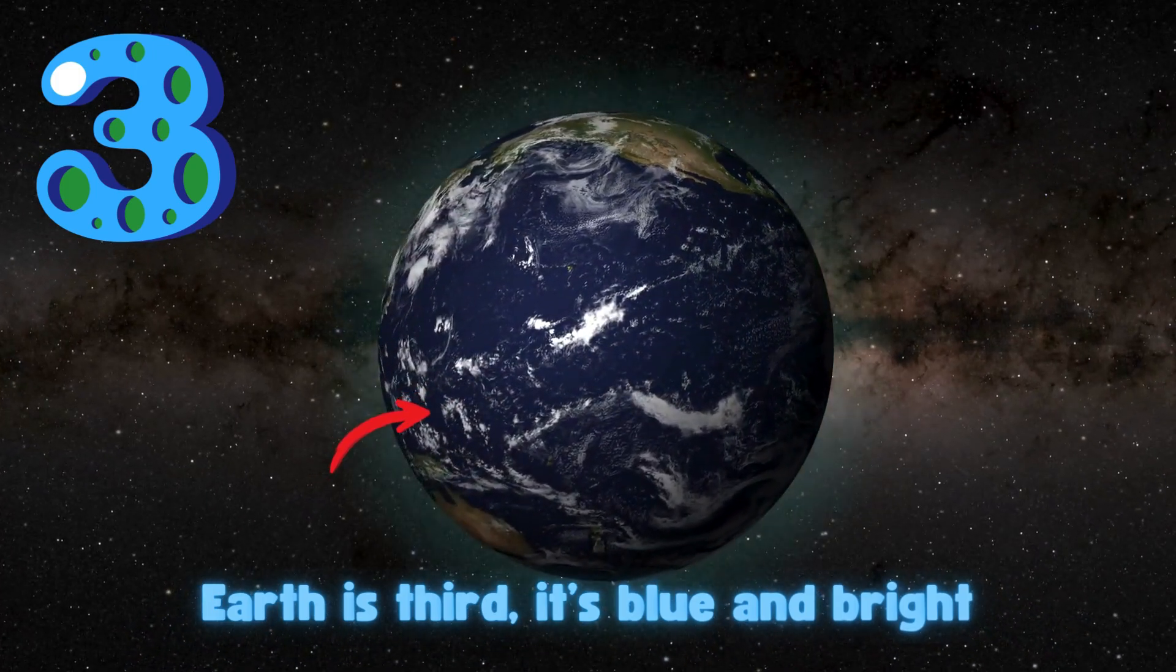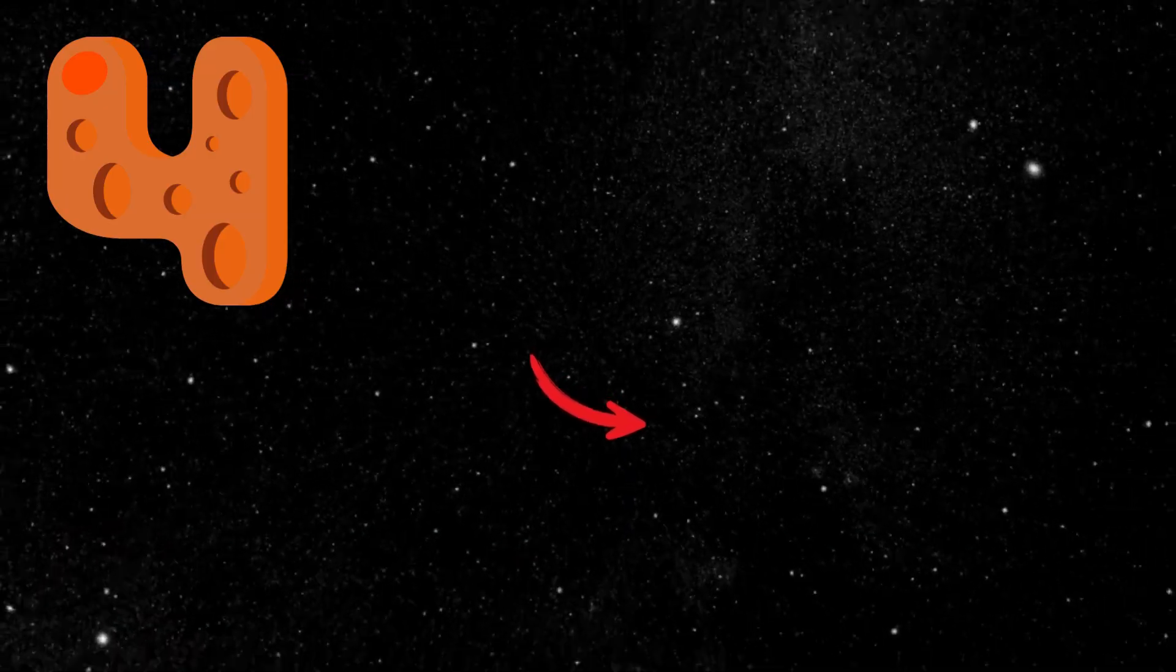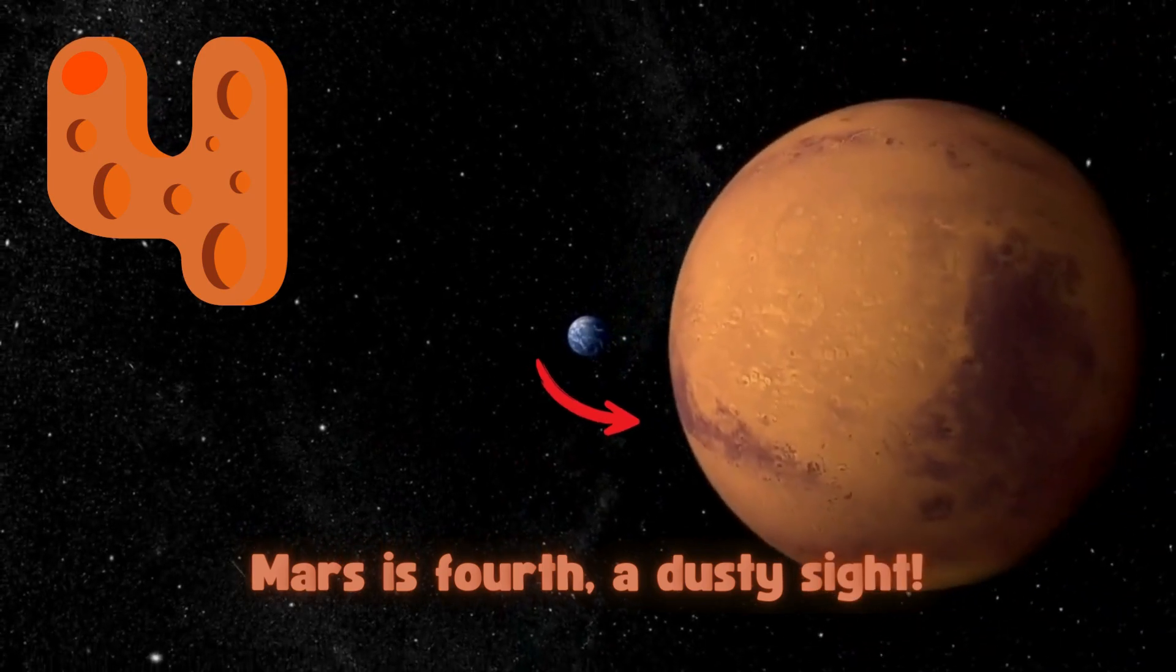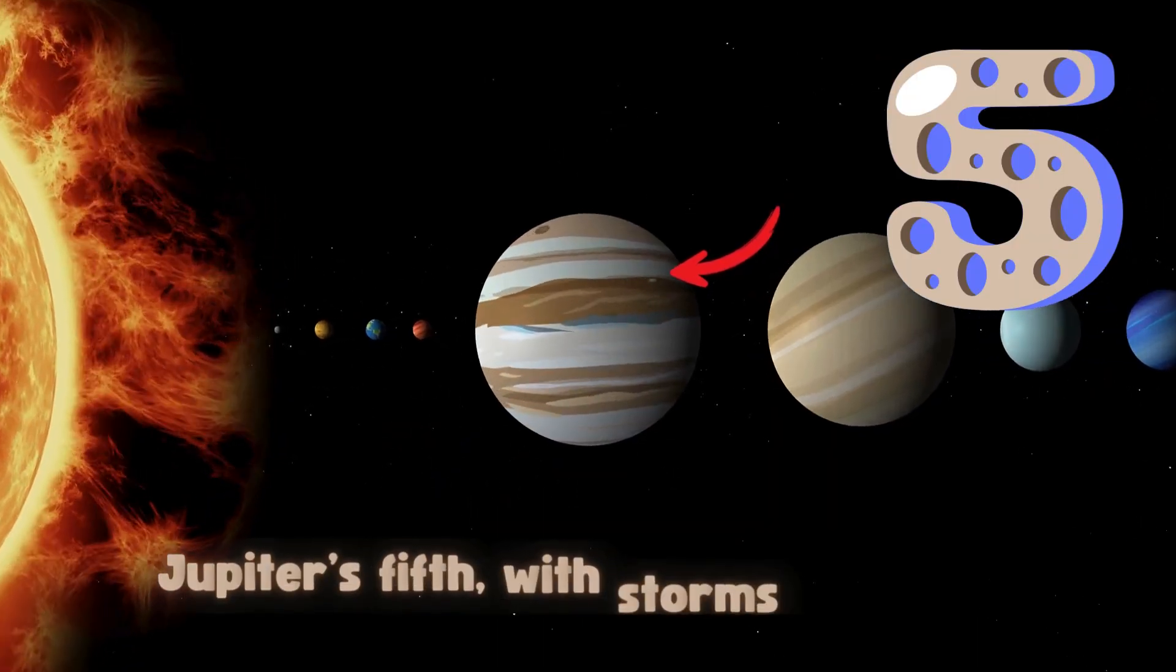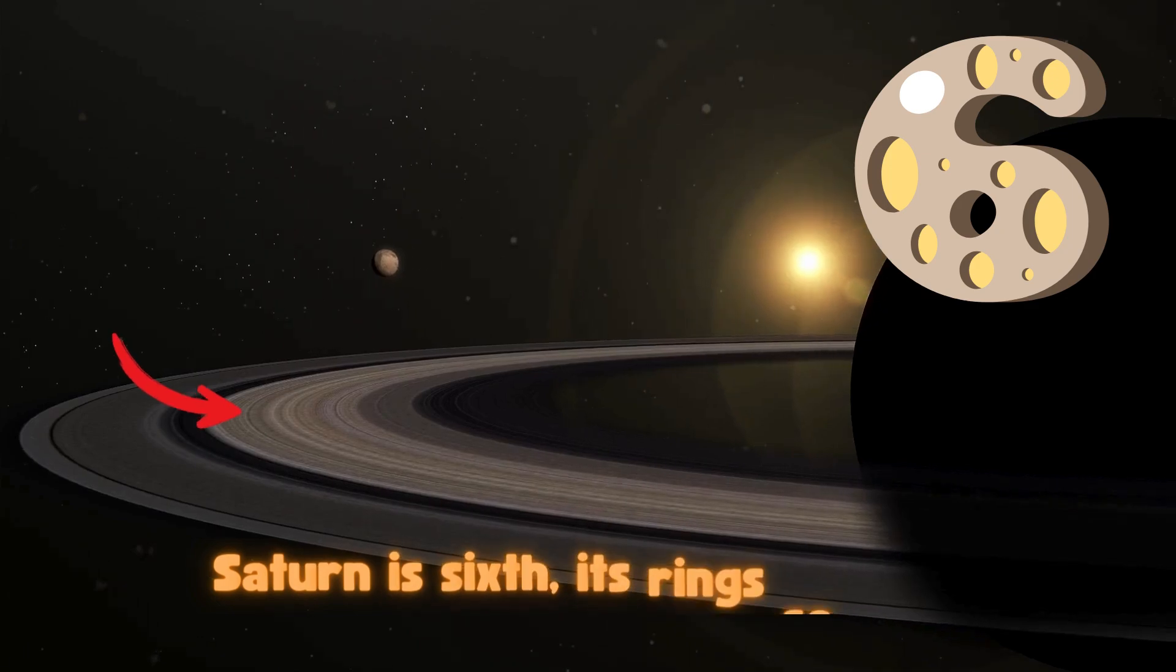Earth is third, it's blue and bright. Mars is fourth, a dusty sight. Jupiter's fifth with storms so strong. Saturn is sixth with rings so long.